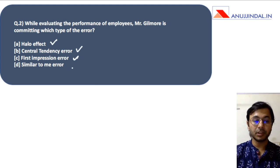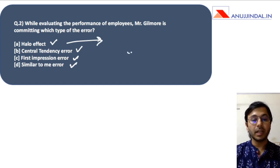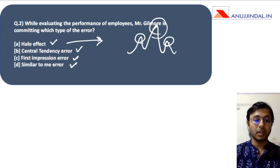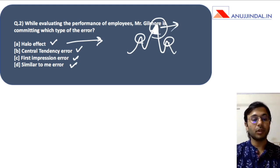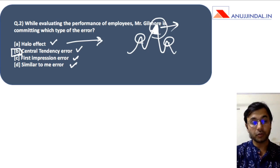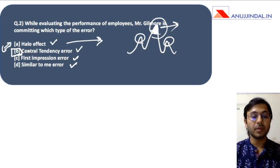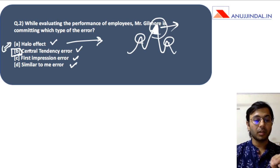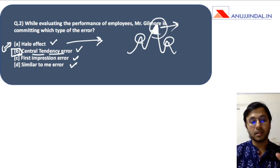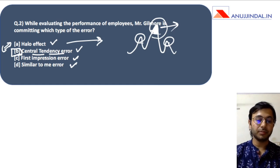The options are: halo effect, central tendency error, first impression error, and similar-to-me error. The halo effect is an error where you highlight one particular quality of a person and assume the entire person is based on that one quality, missing out on other qualities. For central tendency, I want you to go online after this session, Google it, understand it, and provide me the answer in the comment section below.